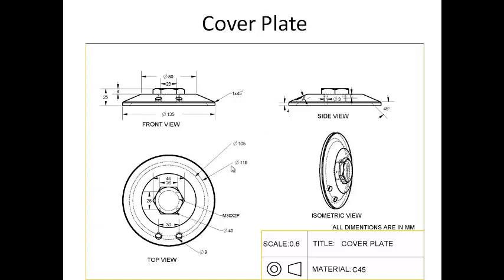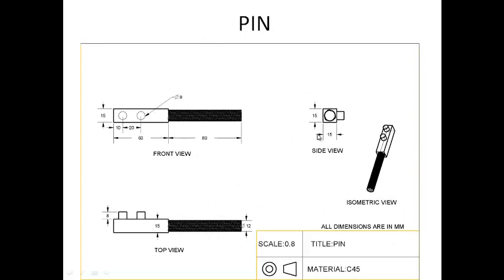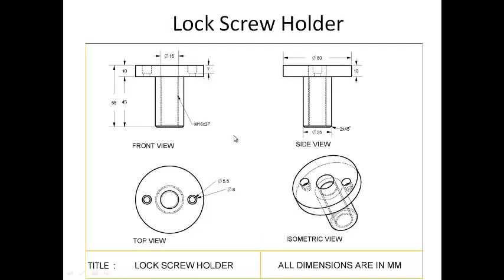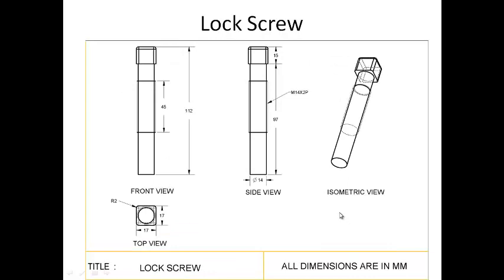In this plate, we put two holes to operate it and we use this pin — we modified and created this pin for the cover plate. This is the fixture base, and we use the lock screw holder here. We put a thread screw to fix it in the fixture with an internal thread to hold the lock screw. The lock screw has an external thread in the middle for fixing it.